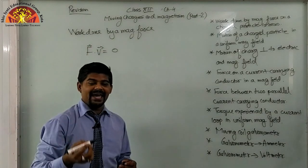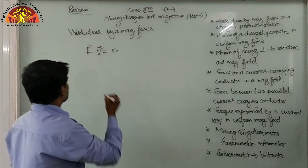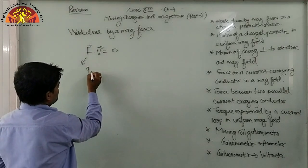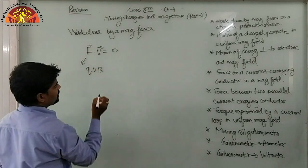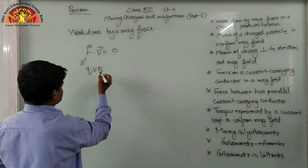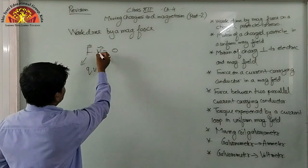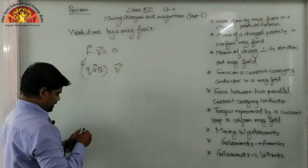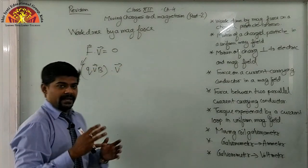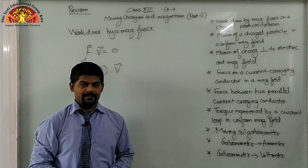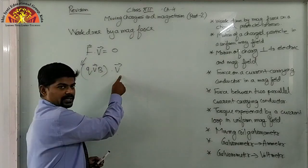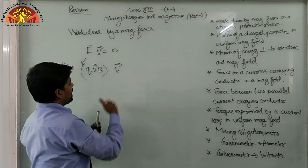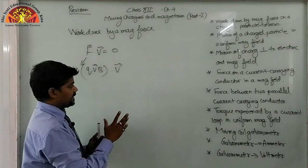Why does F dot V equal 0? Because the magnetic force F is q(V × B). Now, if we take the dot product, the dot product means cos will come — cos of theta will appear when we solve it.